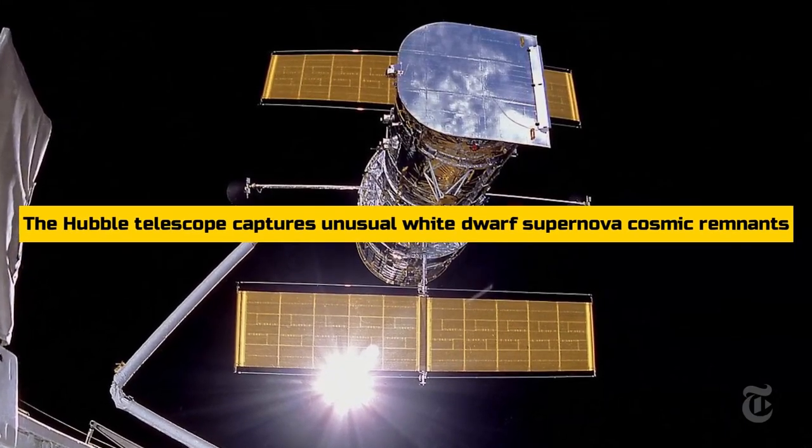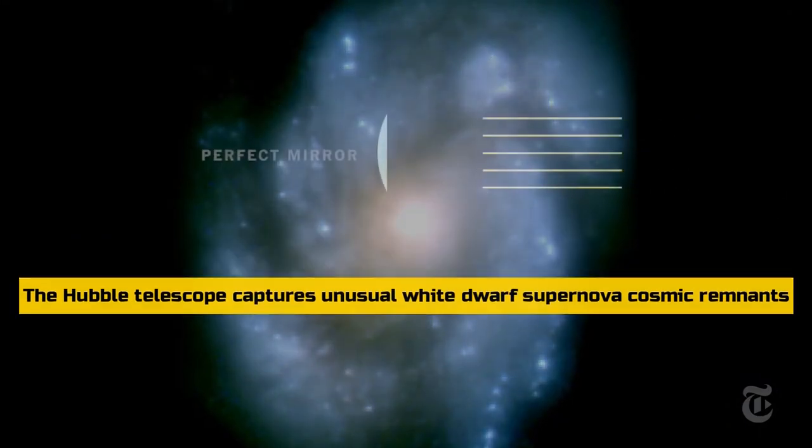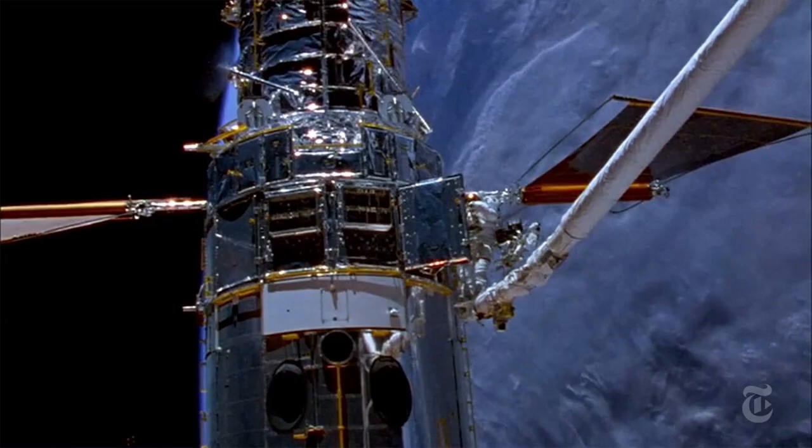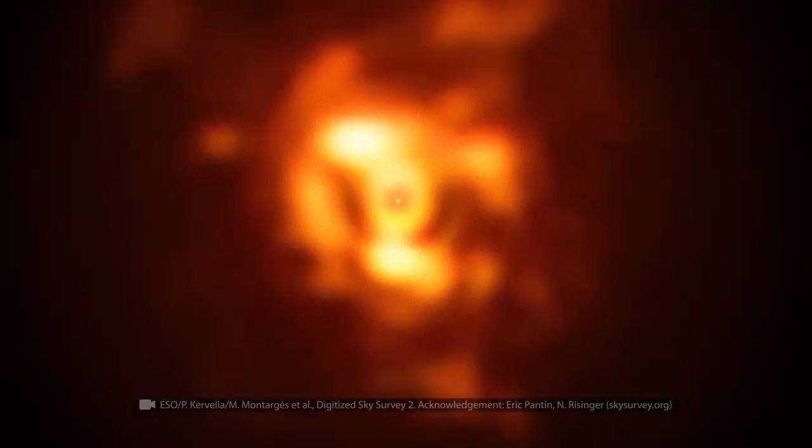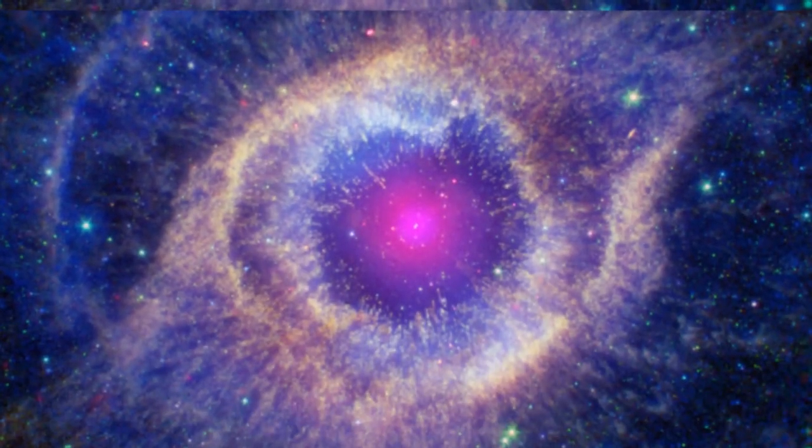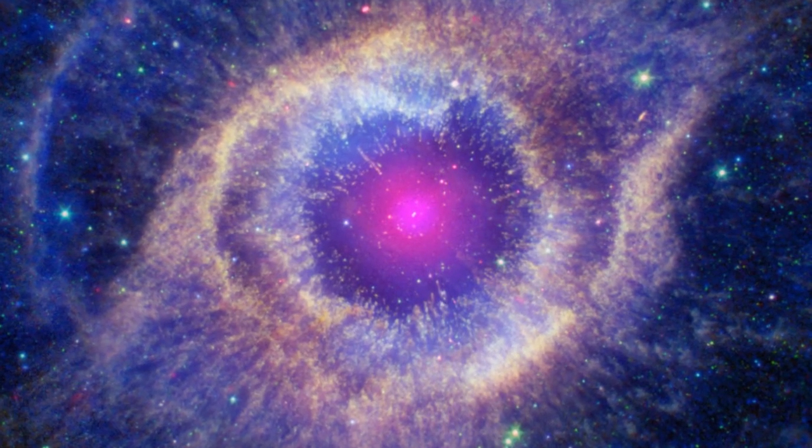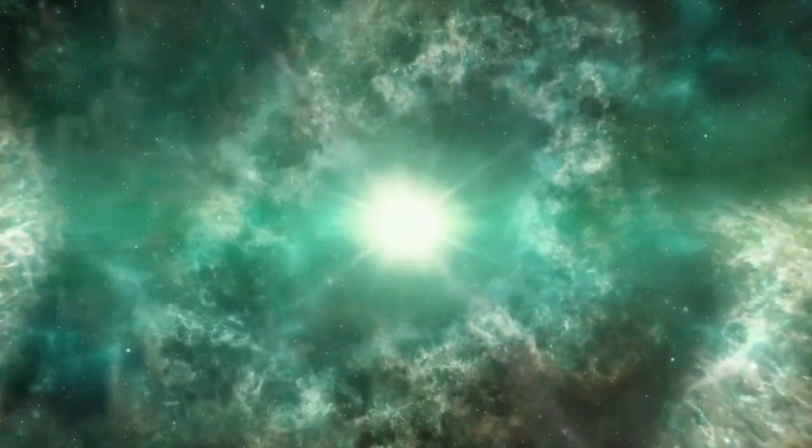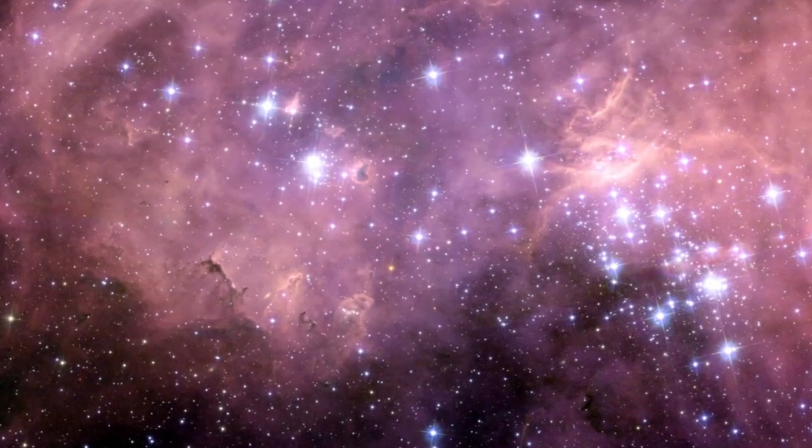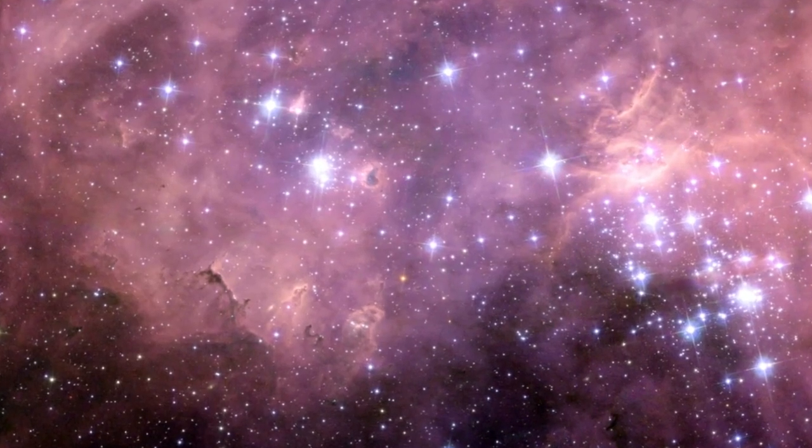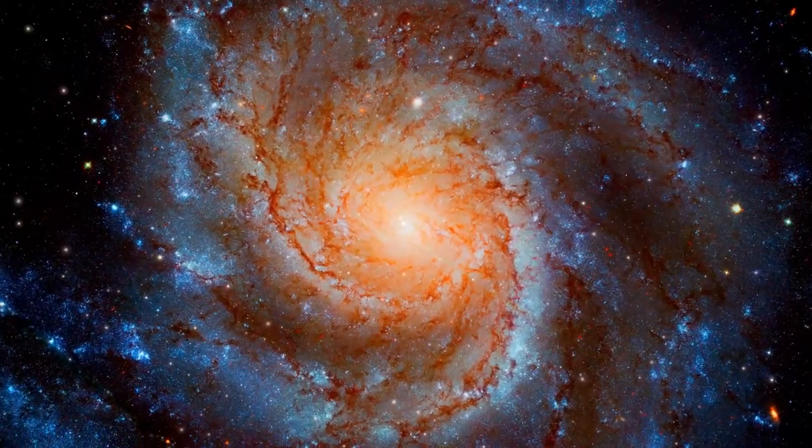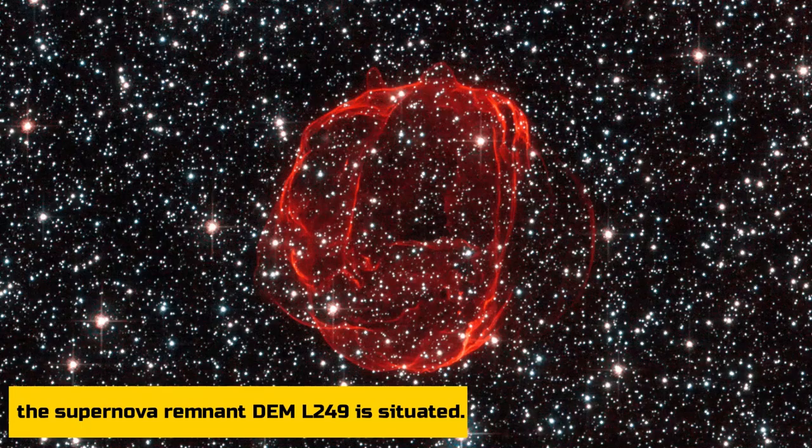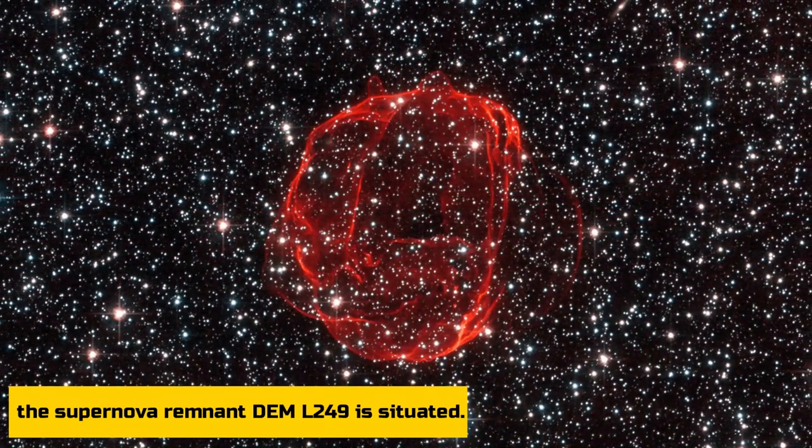The Hubble telescope captures unusual white dwarf supernova cosmic remnants. A breathtaking new image from the Hubble Space Telescope shows the intense red light of the fragmented remains of a star explosion. The colorful cosmic gas ribbons are the byproduct of a Type Ia supernova, the explosion of a dying white dwarf star. One of the nearest galaxies to Earth is the Large Magellanic Cloud, a satellite dwarf galaxy of the Milky Way, where the supernova remnant DEM-L249 is situated.